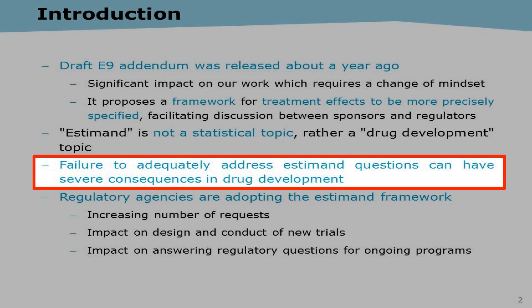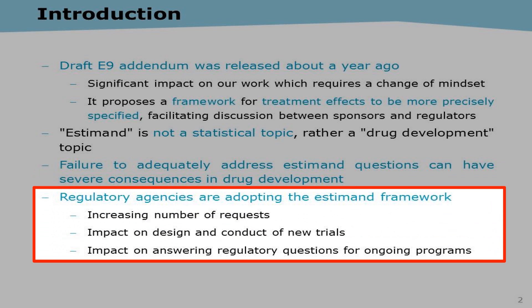I will try to convince you that failing to address the estimand question at the design stage of clinical trials may lead to severe consequences for development programs, and these consequences can manifest in different ways. Since the draft addendum was released about a year ago, regulatory agencies — primarily the FDA and the EMA here in Europe — have started adopting this framework. We see an increasing number of requests from both agencies impacting the design and conduct of new trials, but also impacting ongoing programs.